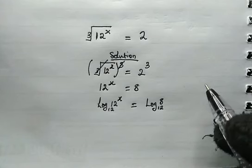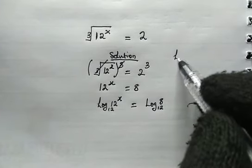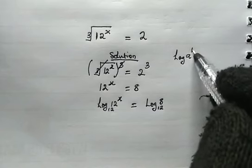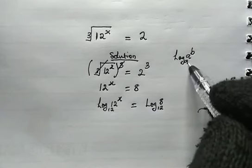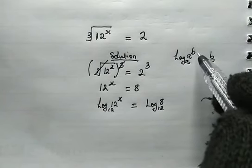But what happens to the left hand side? Let us recall this property: the log of b to the base b simplifies to b.